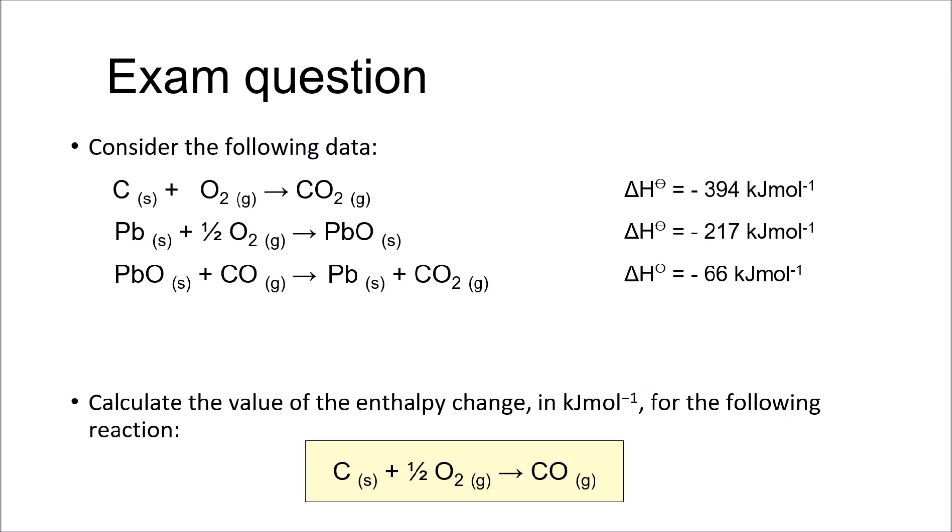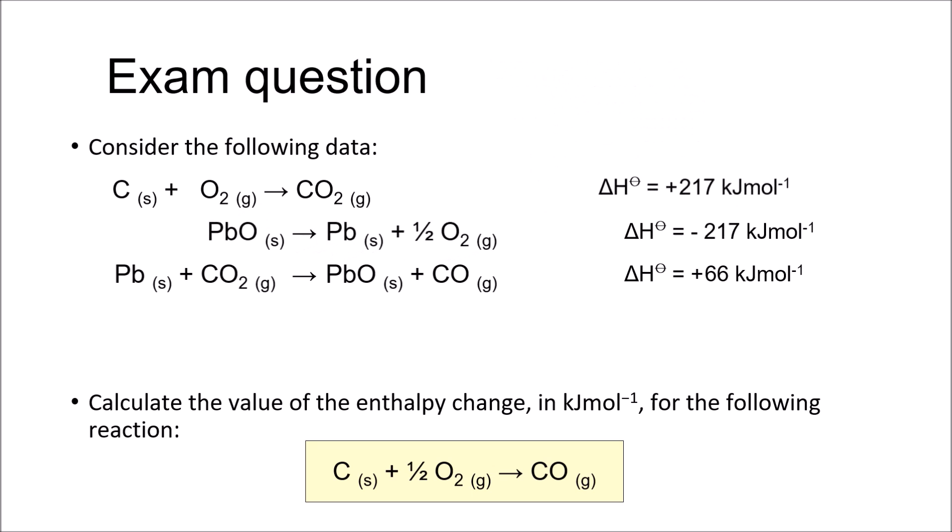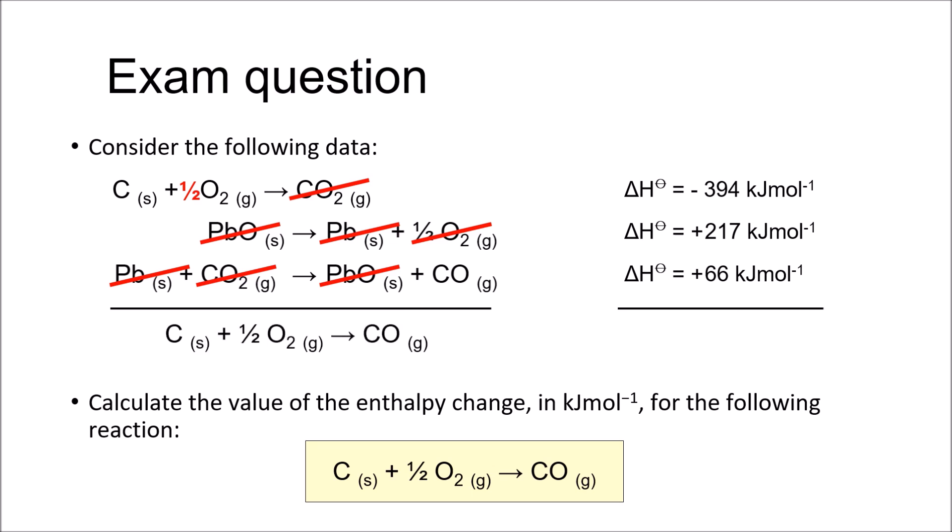An alternative way of tackling these questions, especially when it's a multiple choice question and you just don't have the time to be building a diagram, is by adding together the equations you are given. In our equation, carbon monoxide is a product, whereas in the third equation it is a reactant. So if we invert this equation, it becomes a product. However, the enthalpy change is signed as we are using the backward reaction. By inverting the second equation, we can cancel out lead and lead oxide, besides carbon dioxide and excess oxygen. Finally, add up the enthalpies to get your answer.